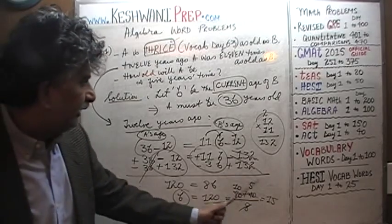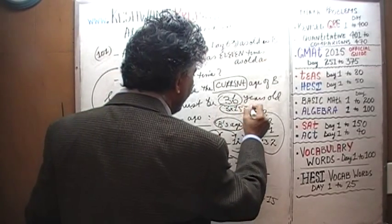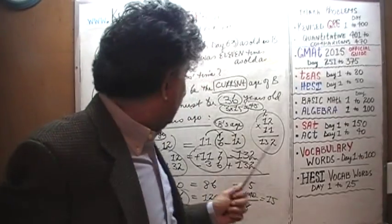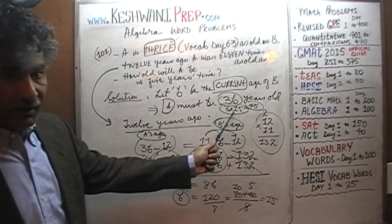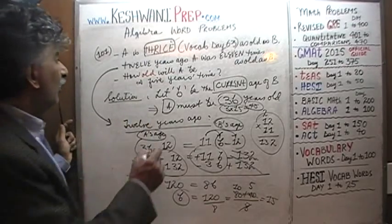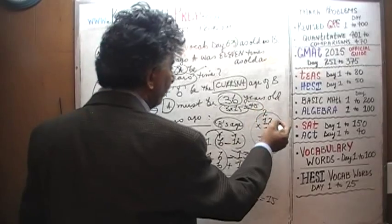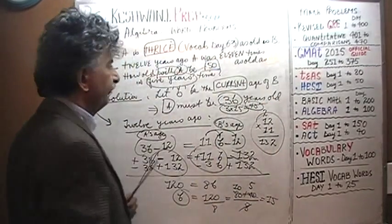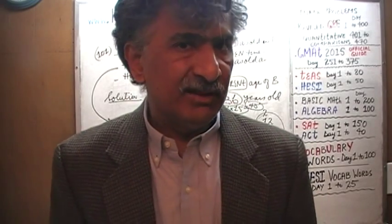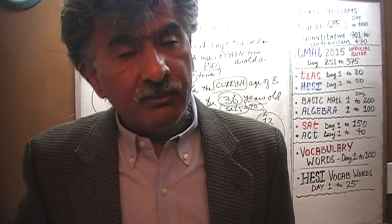If B equals 15, then A is 3 times 15, which is 45. But that's also not the final answer — that represents A's current age. They're not asking A's age today; they're asking how old A will be in five years. Since A is 45 today, in five years he will be 50. The final answer is 50.